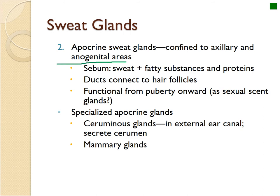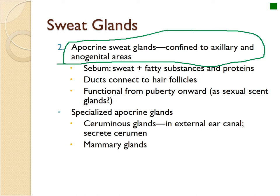Then there are apocrine sweat glands, confined to axillary and anogenital areas — that means around your rear end and genitals. These produce a type of material called sebum — sweat mixed with fatty, gooey substances and proteins. This is related to what mammary glands release. The function of these apocrine glands is mostly to produce odor and sex hormone-related scents. In men, apocrine sweat glands are mostly active in the armpits, releasing fatty substances and proteins associated with musk — chemicals that are attractive to others. These smells are similar to what male deer produce and what dogs detect when they smell each other.